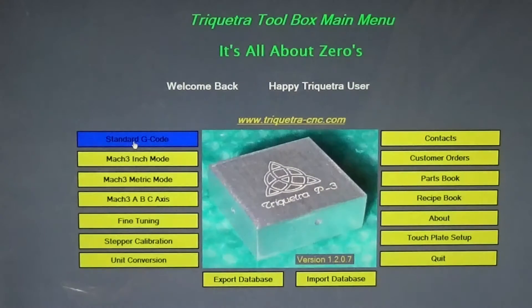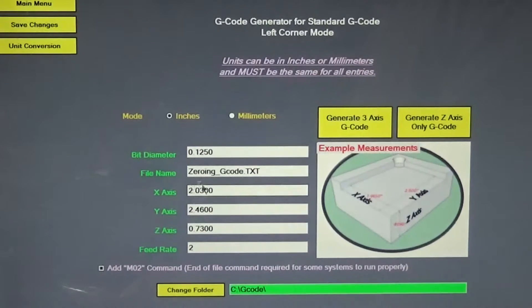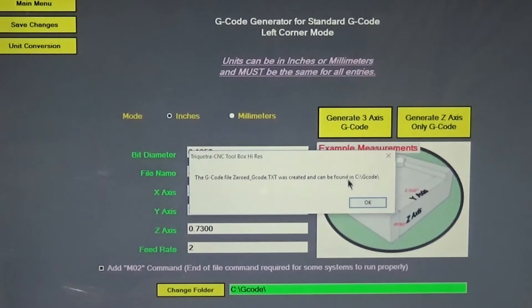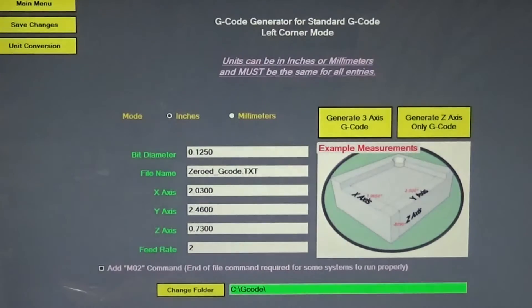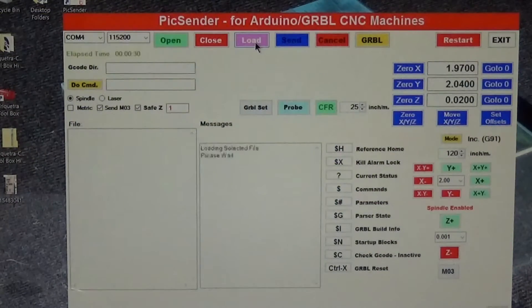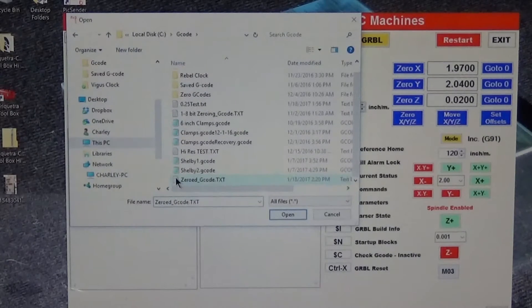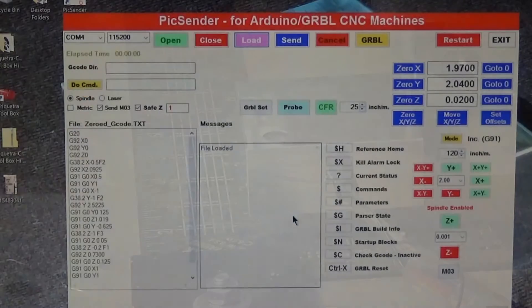So the next thing for us to do is go back to our G code generator page or standard G code. Generate code for the left corner and I'm going to create a file and we're going to call it 'zeroed' with an ed, just to be different. So now we're going to be creating a file called zeroed.gcode. Just go over and click the generate three axis code. Code was generated and it can be found in the same g code folder. Say okay to that. Minimize this, go to our load screen in Pics Sender. Zeroed, here it is. Click that one and open it. Now it's ready to run.